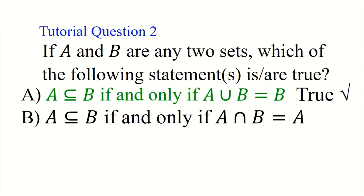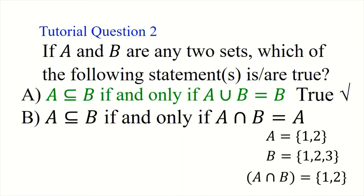The next statement is that A is a subset of B if and only if A intersection B equals A. There are two things involved. First, if A is a subset of B, that is only possible if what is in A and in B equals what we have in set A. For example, if A is {1, 2} and B is {1, 2, 3}, then A is a subset of B. A intersection B is {1, 2}, which is the same as A. So A is also a subset confirmed.